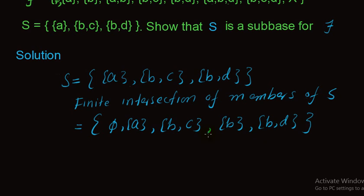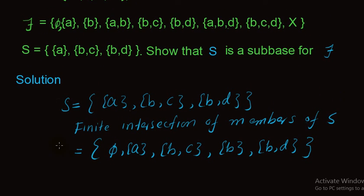Now we check whether this finite intersection of members of S forms a base for tau or not. We check if this set B forms a basis for tau. Singleton set {a} is present in this set. Singleton set {b} is also present. {a,b} is the union of these two singleton sets, so {a,b} is also represented. Phi is also present. Similarly, {b,c} is also present in the base, so {b,c} is also a union of members of this set.